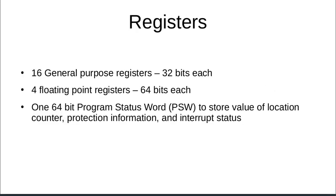There are 16 general purpose registers, each with a capacity of 32 bits. There are 4 floating point registers of 64 bits each, and there is one Program Status Word, or PSW, which stores the value of a location counter, protection information, or interrupt status in its 64 bits.